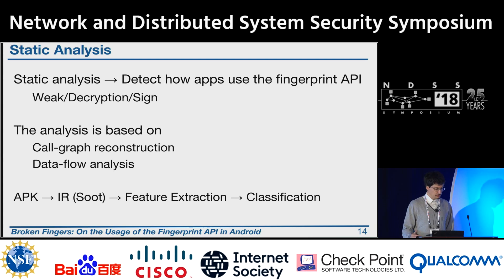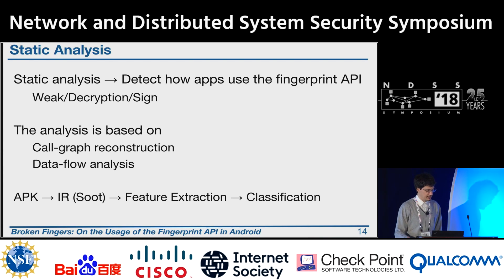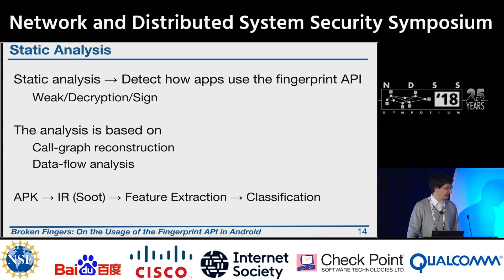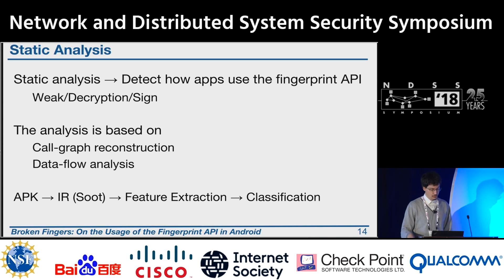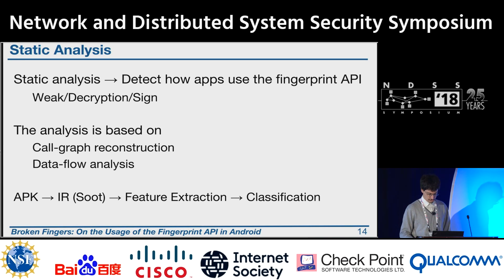To perform a large-scale study on how apps use these APIs, we implemented a static analysis tool based on call graph reconstruction and data flow analysis. As input, we take the APK of an Android app, extract an internal representation — specifically Soot IR — extract features, and classify the app into one of the three categories: weak, decryption, or sign. This tool is open source.